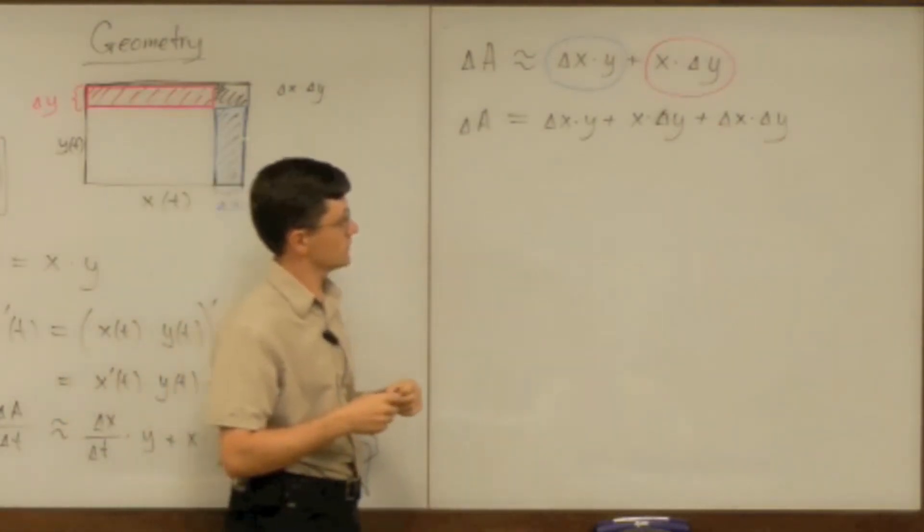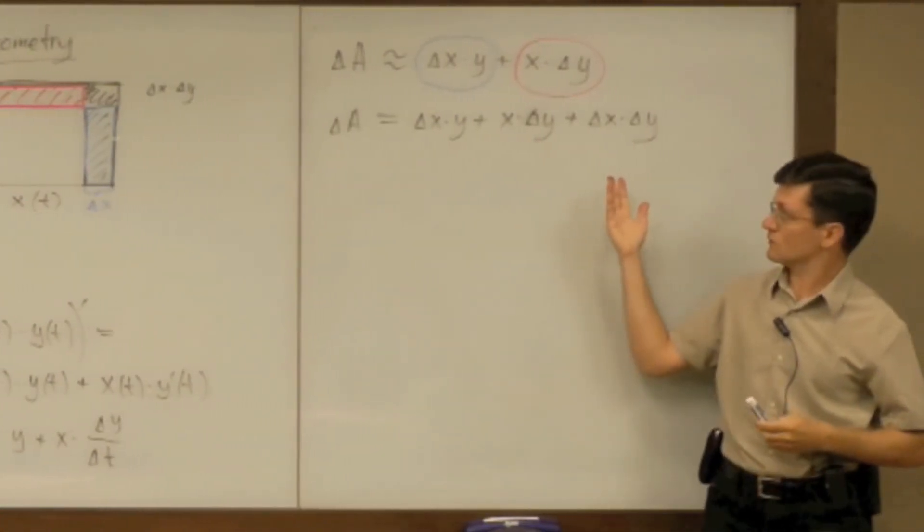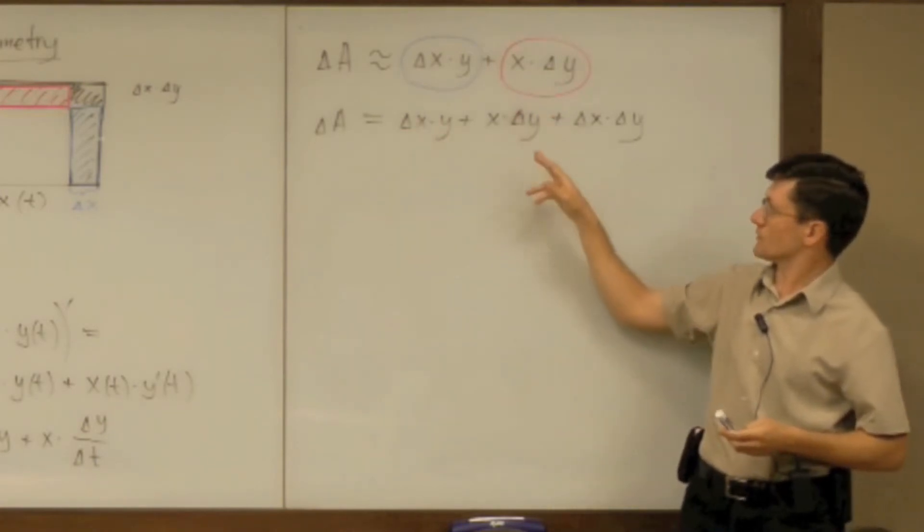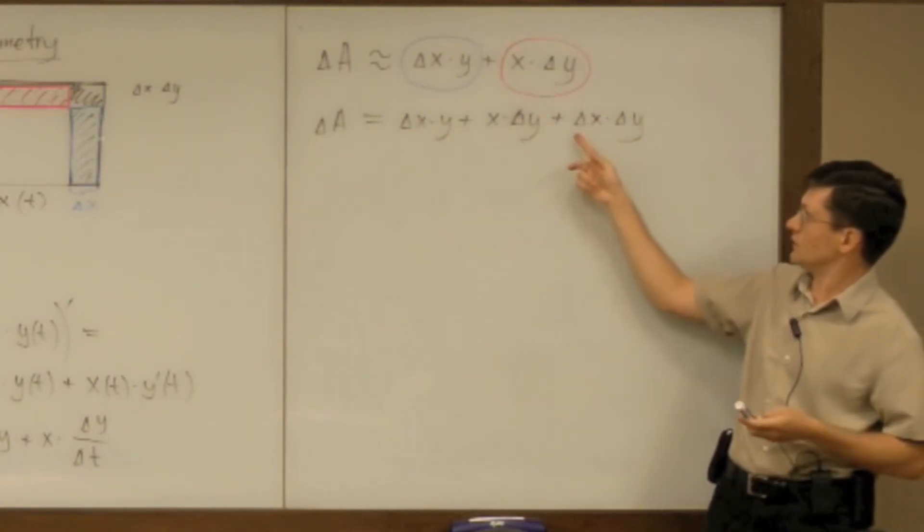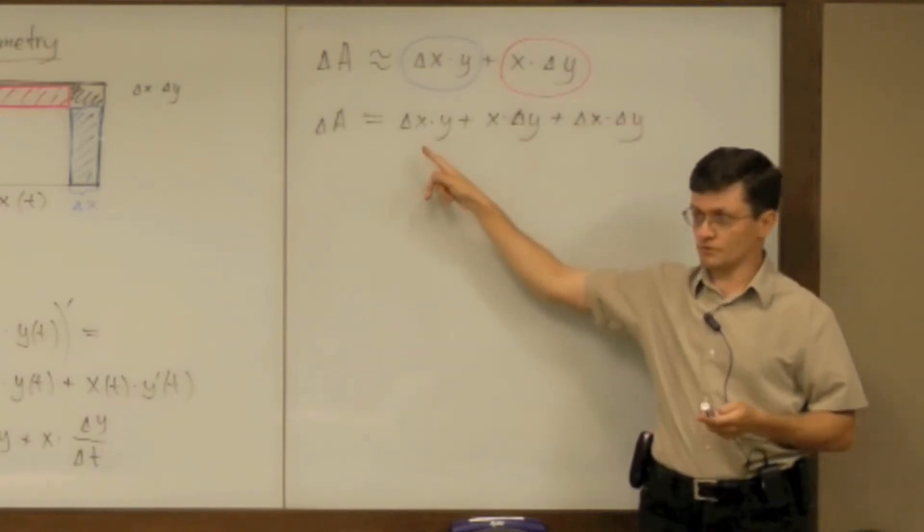Now what can be an explanation for that? Because we have delta x here like a small term here, a small term there, a small term here. Why would we neglect numerically this term in comparison to those two?